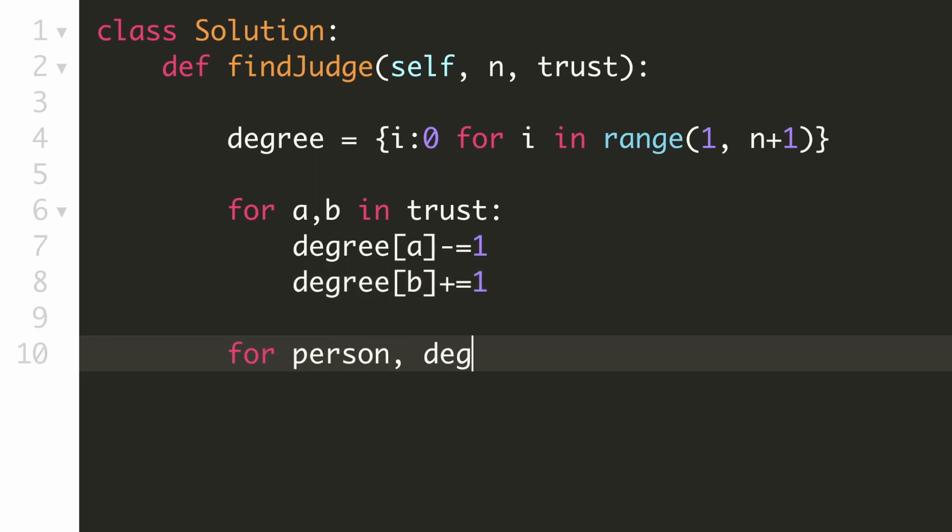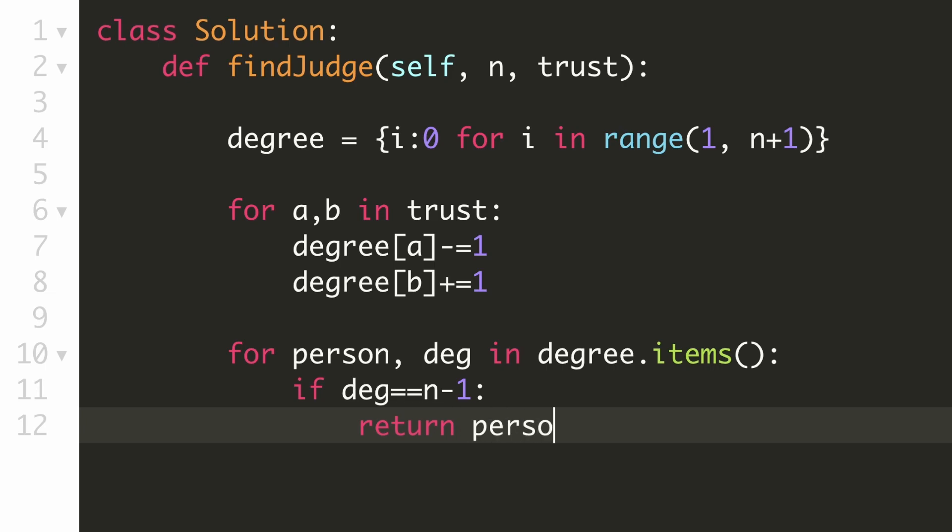Now once we are done calculating the degree for each person, we will go through all the entries in the hash map. And if we find a person with degree as n-1, that means that person is the town judge, so we will return this person directly. And if after going through all the degrees we still could not find a suitable judge, then we will return -1.